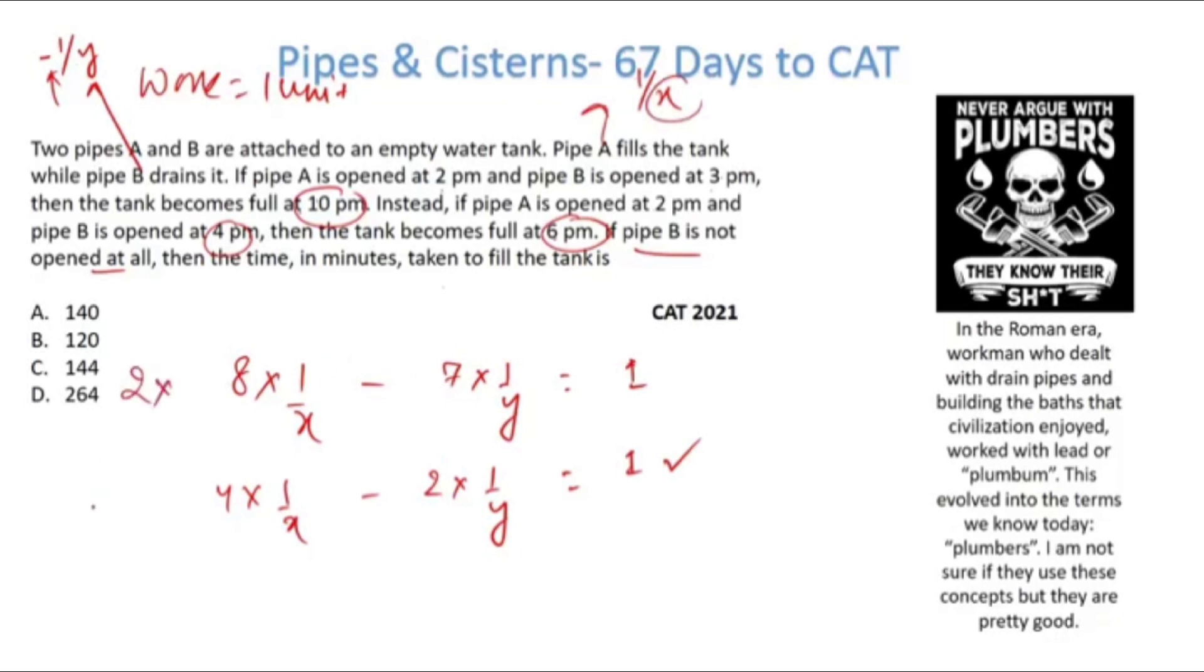How can I eliminate y? Just multiply it with 2, multiply this with 7. Now all I have here is 7 times 4 is 28, 8 times 2 is 16, so that becomes 12/x. So that is equal to 5. So x is equal to 12/5 in hours. I have to get it in minutes. The answer here is 144.